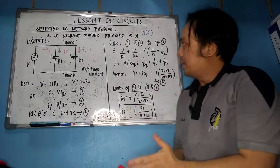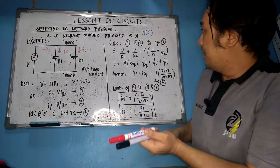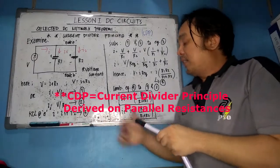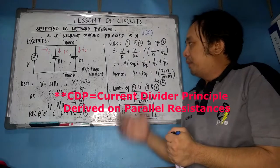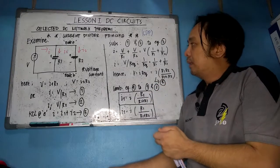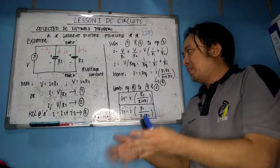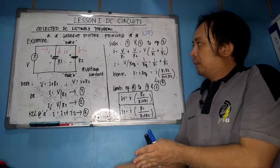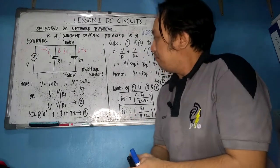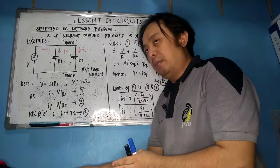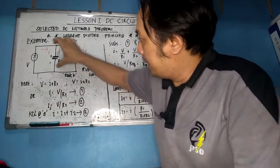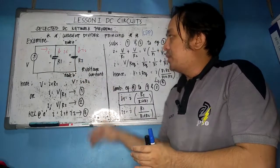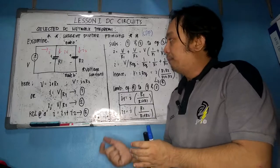Now we will discuss the second DC Network Theorem: the current divider principle, or CDP. The current divider principle is derived from parallel resistances. If the voltage divider principle is derived from a series connection, the current divider principle is derived from a parallel connection. We examine a circuit with two resistances connected in parallel, connected to the same DC voltage source V.